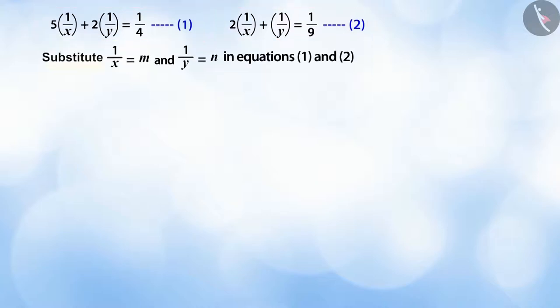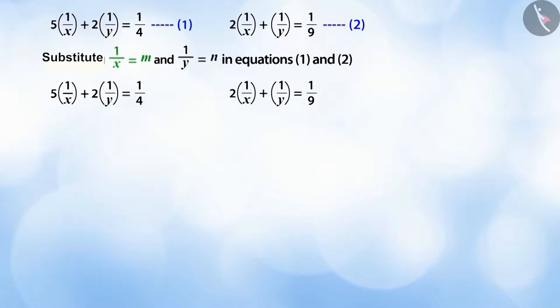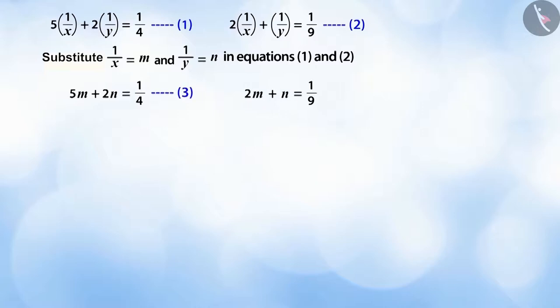To do this, if we replace 1/x by m and 1/y by n in equations one and two, then we get equations three and four. In this manner we have expressed equations one and two in the form of linear equations.